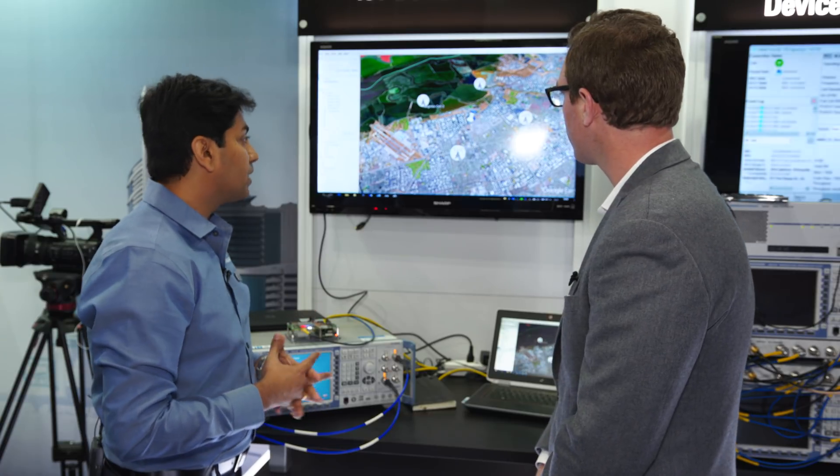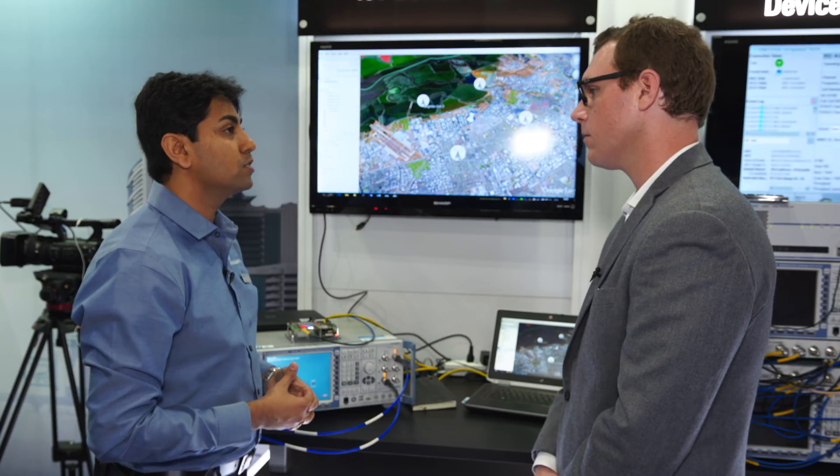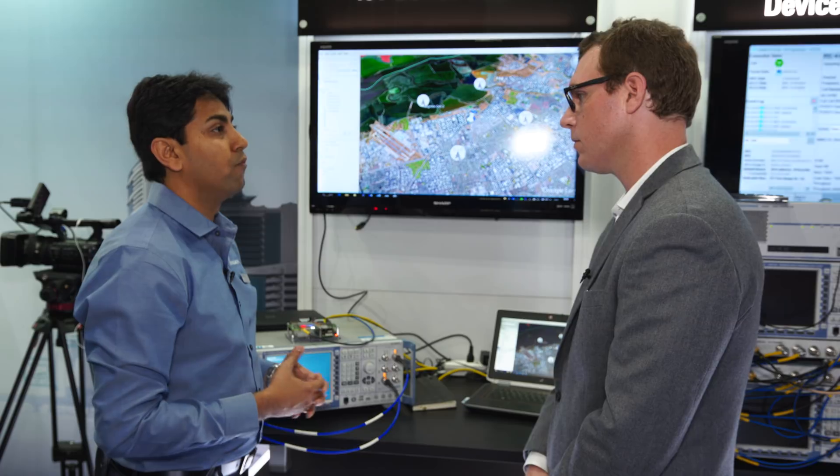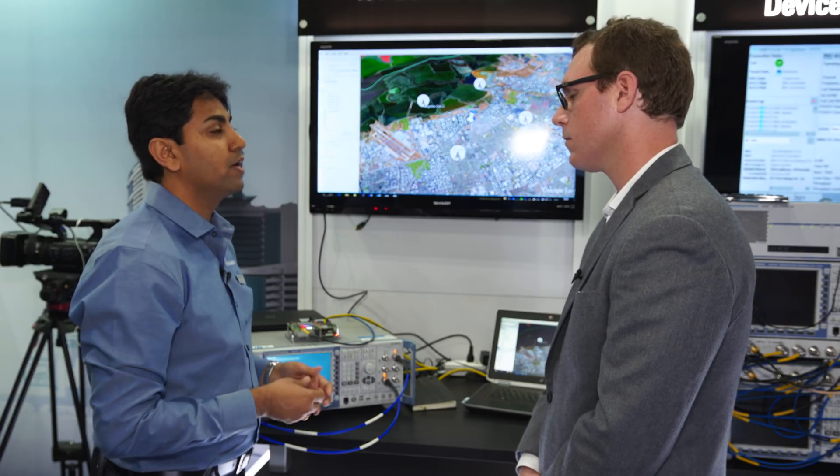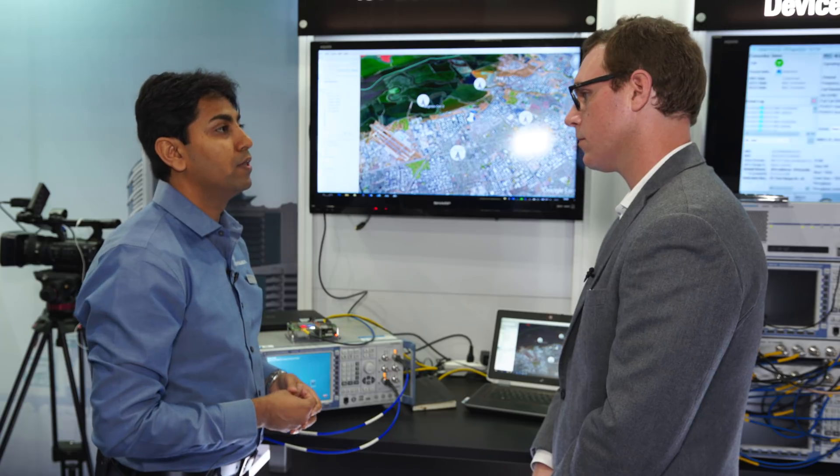So the application for something like this would be asset tracking in low power wide area networks, such as bike rentals in an urban environment which has coverage from NB-IoT. They have a NB-IoT chip on it, and you can always track your asset as it moves around the area.